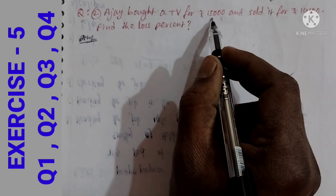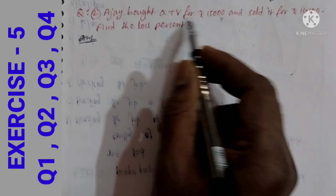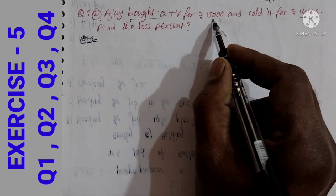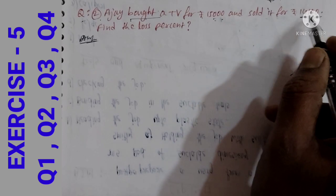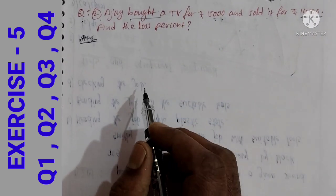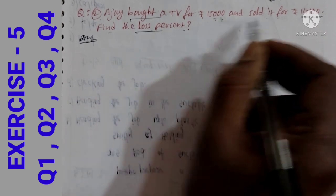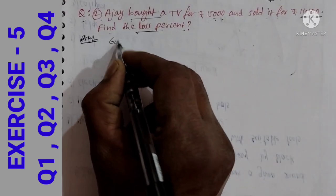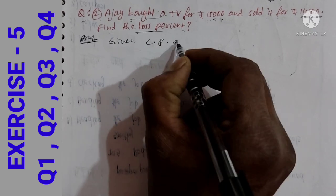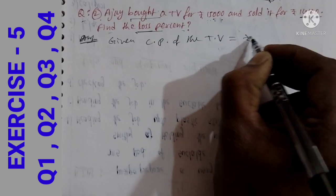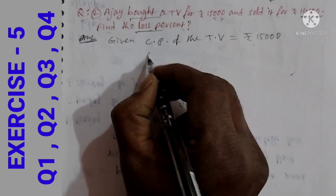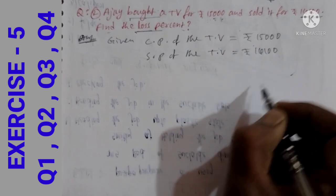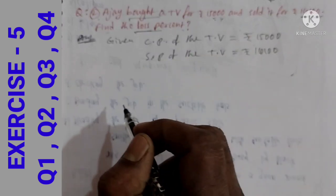Ajay bought a TV for Rs. 15,000 and sold it for Rs. 14,100. Since the selling price is less than the cost price, there is a loss. Given: cost price of the TV is Rs. 15,000, and selling price of the TV is Rs. 14,100.